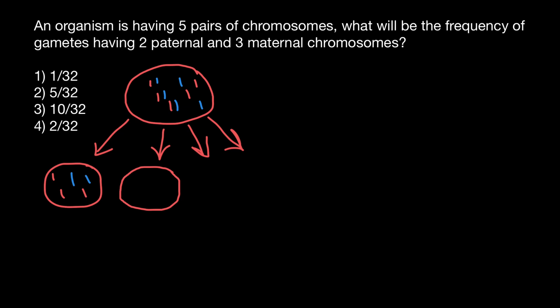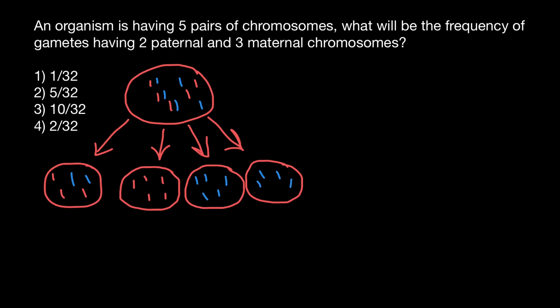Another combination would be that all chromosomes are paternally inherited — just by random chance, all five from each pair represent chromosomes the organism got from the father's side. Another combination can be that all chromosomes would be maternally inherited — all five. Is this possible? Yes, it is possible. Another combination would be four maternally inherited and one paternally inherited. So combinations are many. Let's find out how many. Each empty box here represents one chromosome in an egg cell.